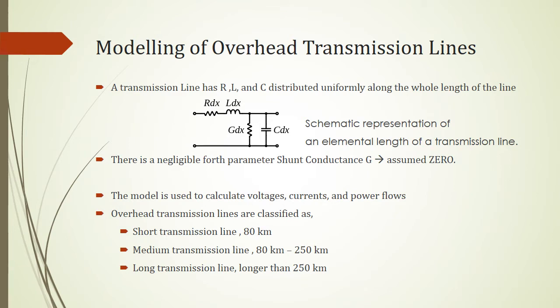If we look at the overhead transmission line, we know that the line can have the resistance R, inductance L and capacitance C distributed uniformly along the whole length of the line. This is a schematic representation of an elemental length of a transmission line. Elemental length here is dx.